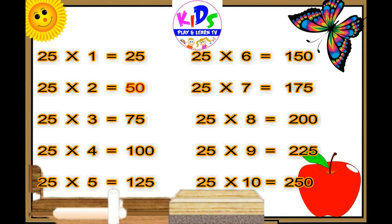25 eights are 200, 25 nines are 225, 25 tens are 250.